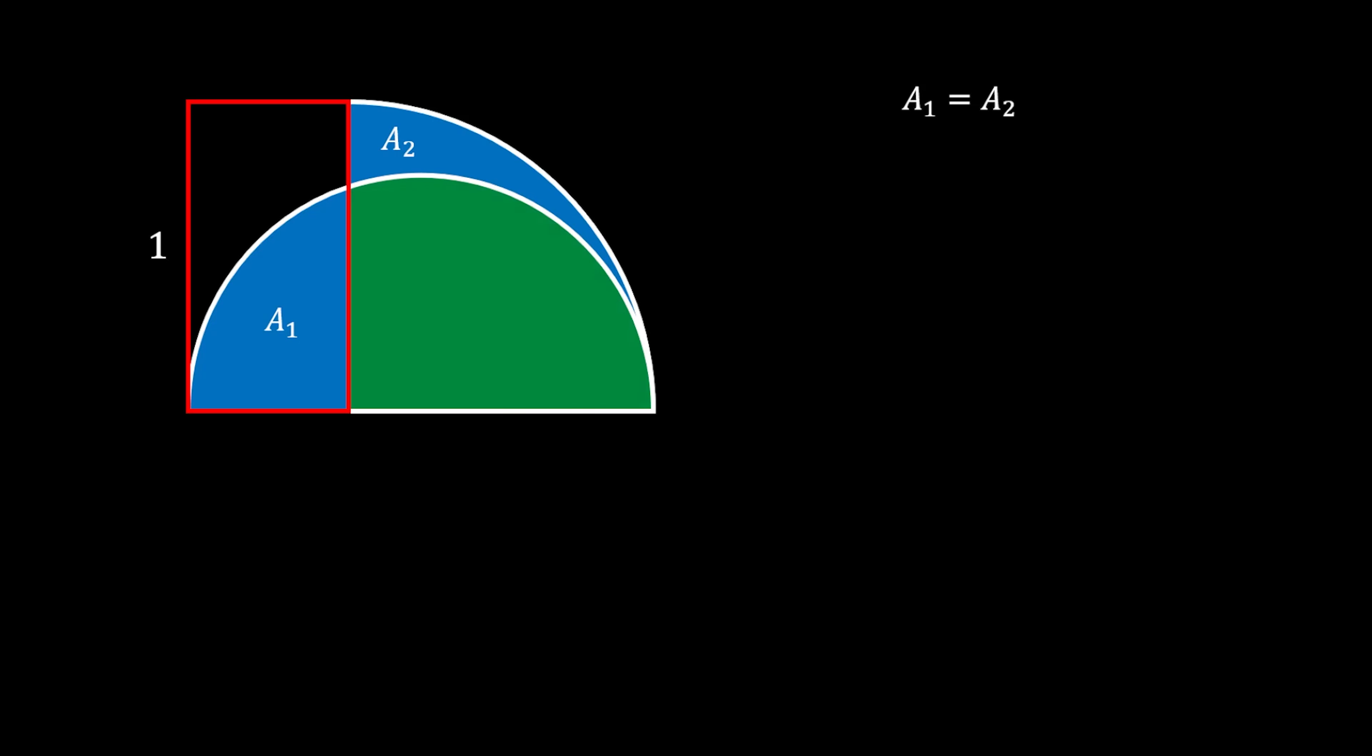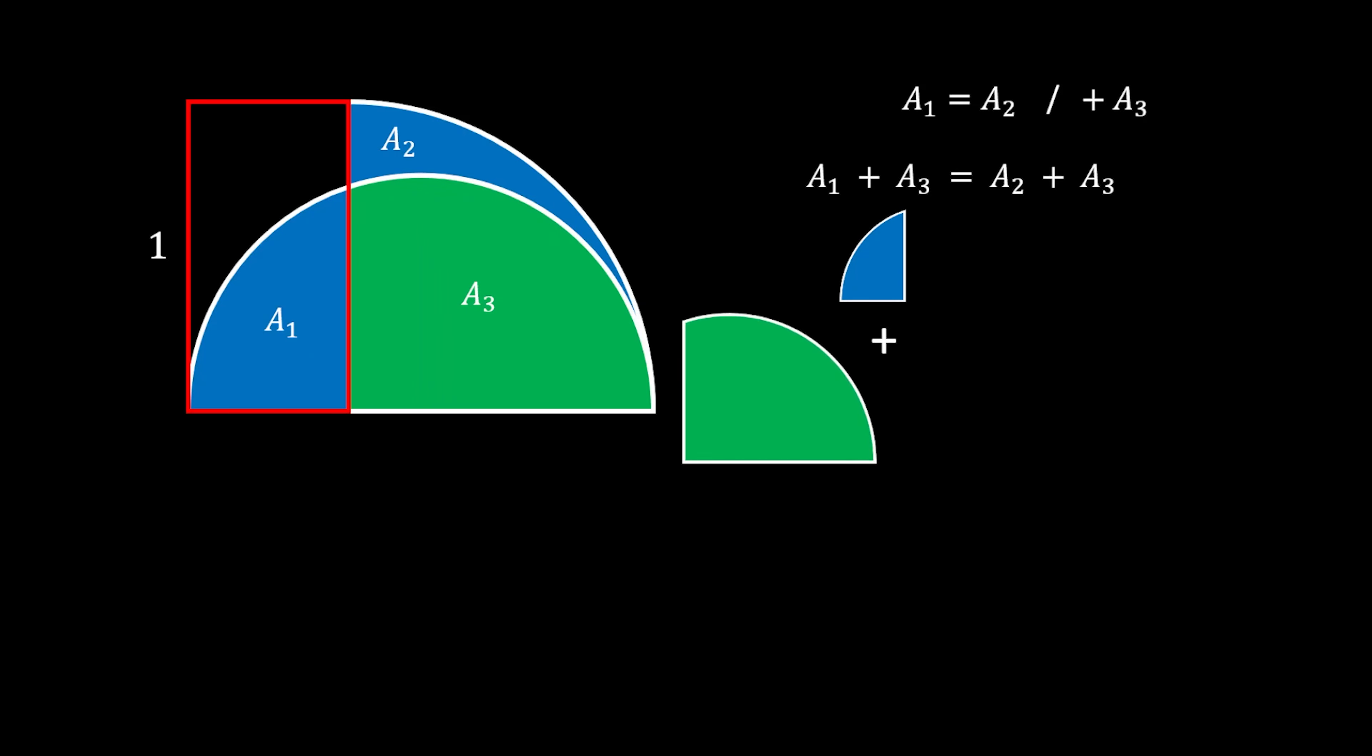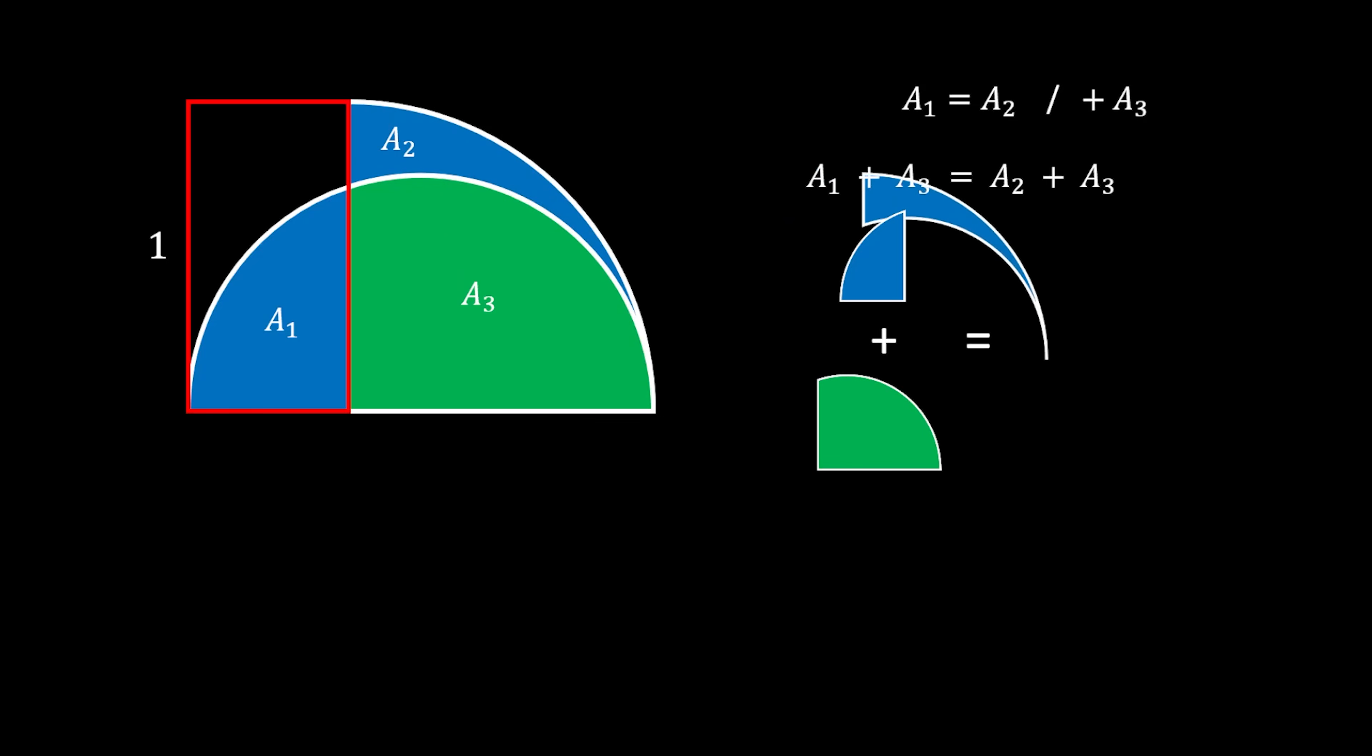Now let's look at this green segment which we will mark as A₃. We can add the area A₃ on the left and right side of this equation without changing the equilibrium. What did we get by doing this? Let me show you graphically. We can take area A₁ and add area A₃ and say that equals area A₂ plus area A₃.